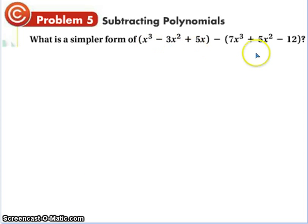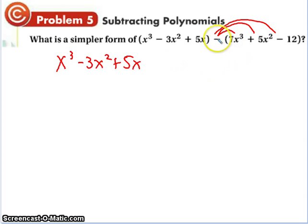Alright, subtracting. So basically, this is the side-by-side method. And we're going to leave the first part alone. If you ever want to try something on your own before I do it, pause it before I start writing. The beauty is of this whole process is you can pause it. So x cubed minus 3x squared plus 5x. And now I'm going to take this times everything in that parenthesis. So negative times 7x cubed is negative 7x cubed. Negative times positive is negative 5x squared. And negative times negative 12 is now positive 12.